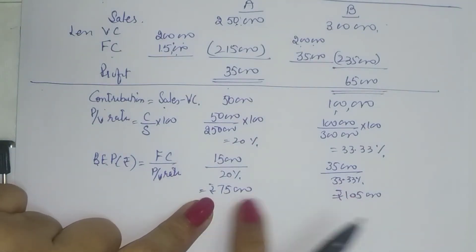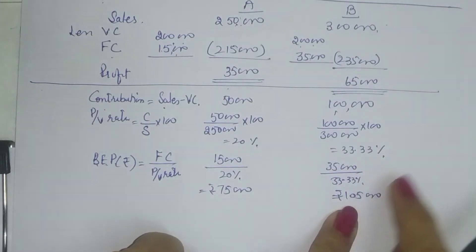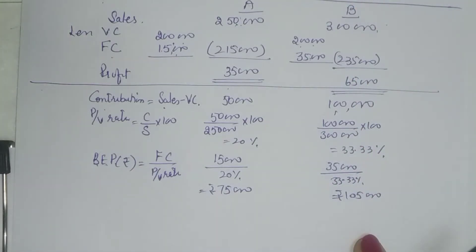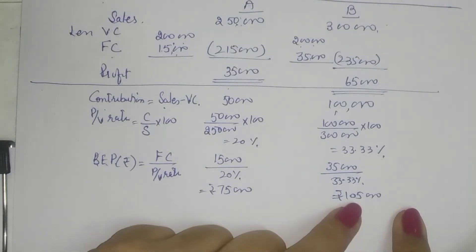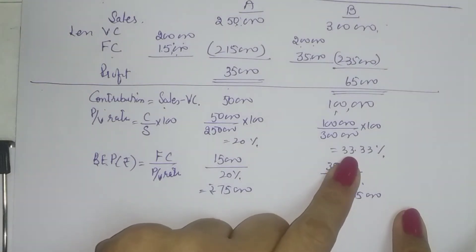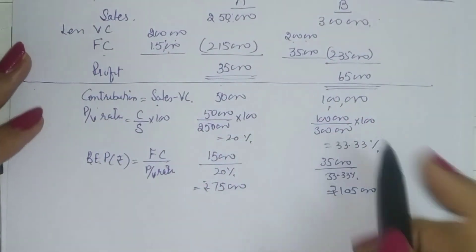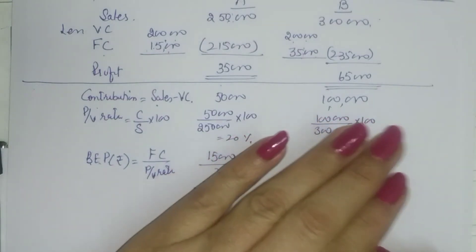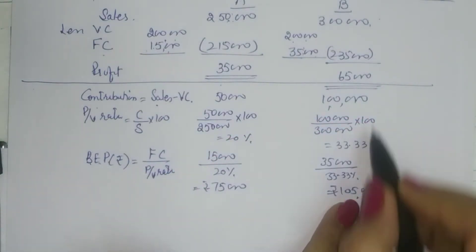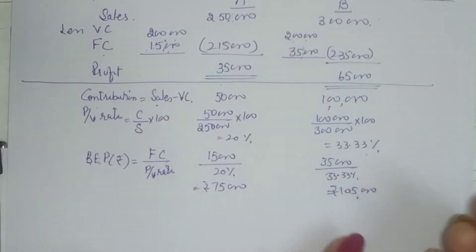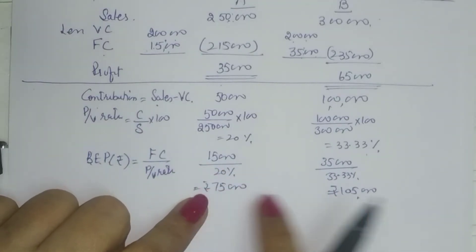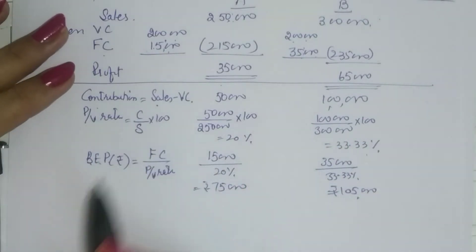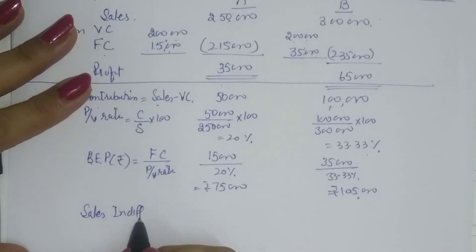So if your sales are in the range up to 1,05,000, you should opt for A. But we cannot directly say that any sale above 1,05,000 will give more profit in B. Even beyond its BEP, B earns higher contribution per sale at 33.33%, but that extra contribution is initially cancelled by the additional fixed cost of 20,000 more. Profits from B will grow faster, and eventually both products reach a stage where they give the same profit — that level is the sales indifference point or profit indifference point.